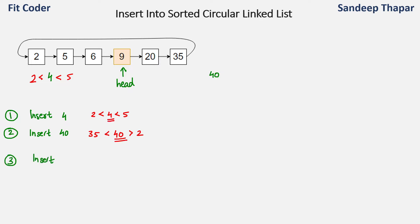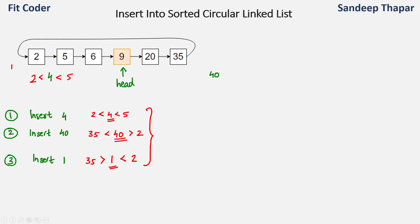The third case is inserting the value at the front of the linked list — for example, inserting value 1. In this case 1 is less than the previous node which is 35, and it is also less than 2, the node before which we are inserting. When given a random pointer we will face these 3 cases. If we were given a pointer to node 2 it would be simpler since all nodes are in increasing order. But since we are given a pointer to any random node, some nodes like 20 and 35 are greater than it, while nodes 2, 5, and 6 are less than the head. So we have to handle these 3 cases.